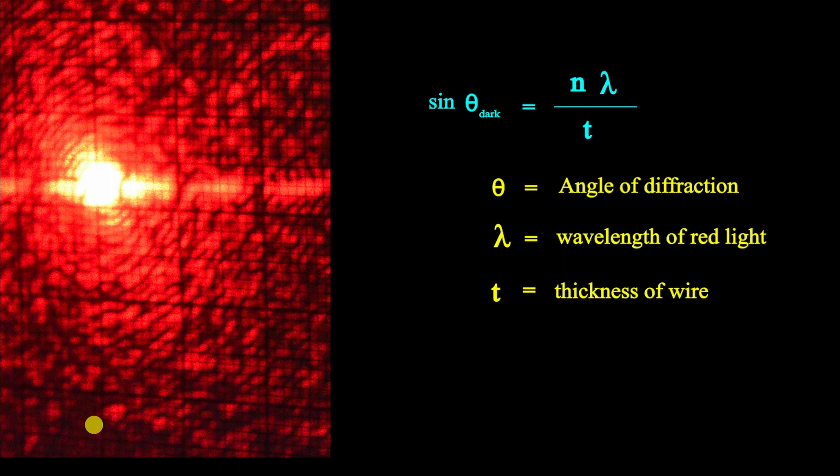We can rewrite the formula discussed earlier, so that we can calculate the thickness of the wire with known values. Where t is the thickness of the wire, d is the distance between screen and wire, which is 3 meters in our case, and lambda is the wavelength of red light, which is 650 nanometers.